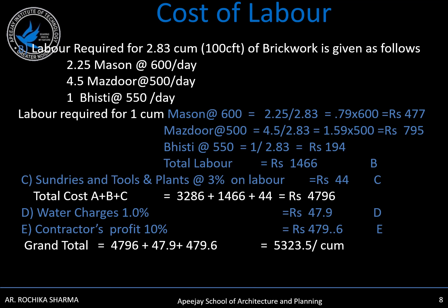Sundries and tools and plants at 3% of labor cost will be Rs. 44. So total cost will be Rs. 4796, as you can see. Water charges at 1% will be Rs. 47.9, and contractor's profit at 10% will be Rs. 479.6. So the grand total — including cost of material, cost of labor, cost of tools and plants, water charges, and contractor's profit — will be Rs. 5323.5 per cubic meter. This is how much money is required for 1 cubic meter of brickwork in 1:4 cement mortar. Thank you.